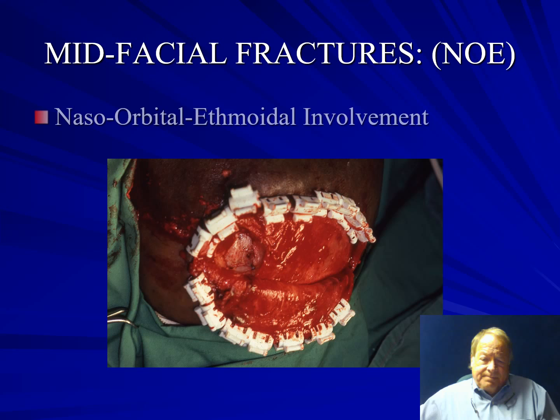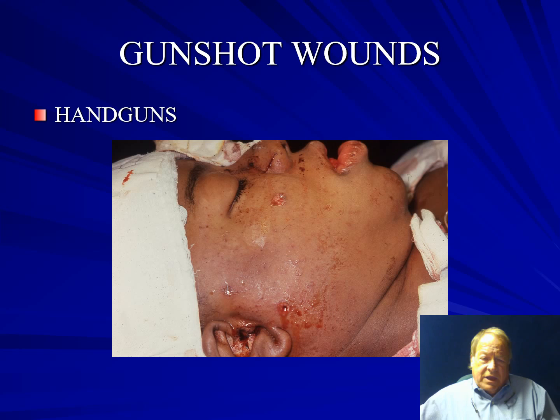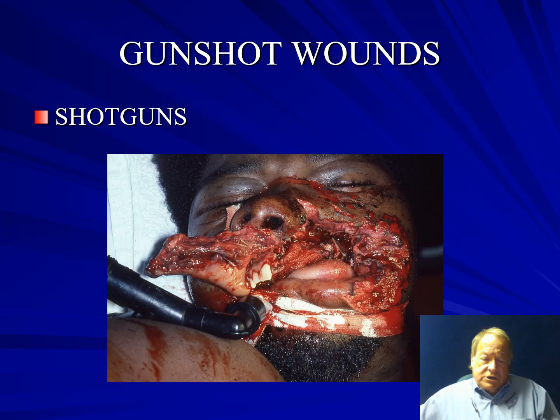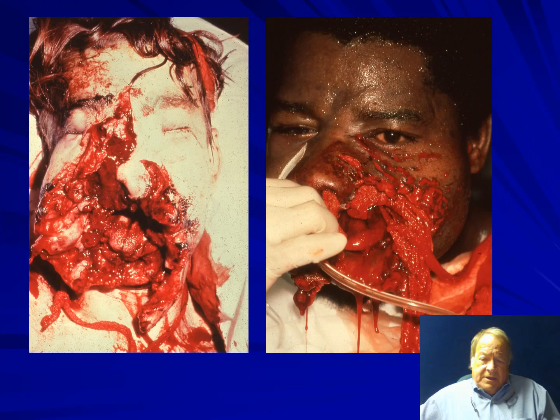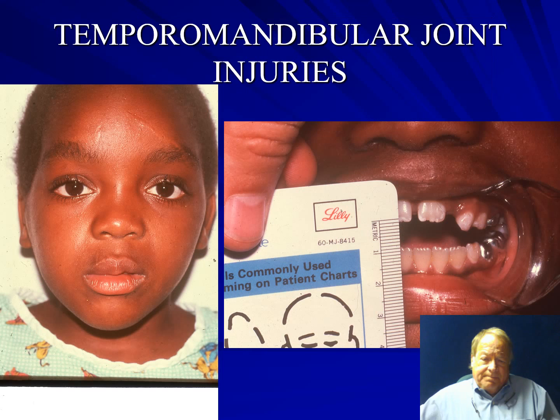That particular case was in fact a gunshot wound, with multiple entrance wounds visible in front of the ear on the cheek and also in the forehead. More severe gunshot-type wound injuries are shotgun blasts to the face, where you have not only bony destruction but massive soft tissue avulsion and loss, and these are examples of that sort of injury.